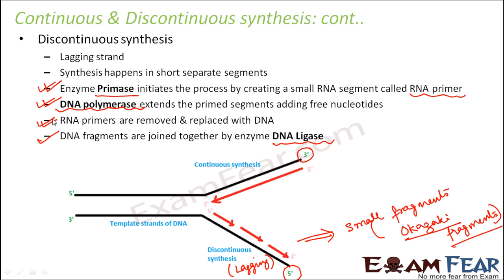We do not want any RNA part on a DNA, therefore the RNA primers are removed and replaced with DNA. Now we have all small fragments of DNA. All these small fragments need to be joined together to form a complete strand of DNA. For that purpose we have the enzyme DNA ligase, which joins all these small fragments to form a complete strand of DNA, and that is how a complete DNA is formed on this side.